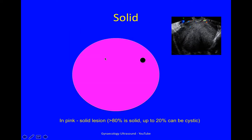This mass is solid. At least 80% of this mass is solid, but it can have a cystic component of up to 20%.